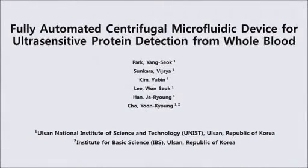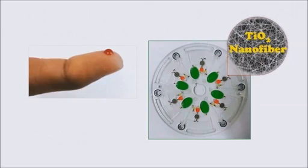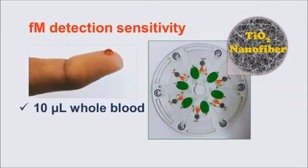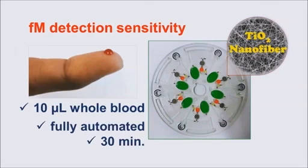The overall goal of this procedure is to improve the detection sensitivity of ELISA using electrospun nanofibers. This video demonstrates how to achieve femtomolar detection sensitivity of proteins in 10 microliter of whole blood samples within 30 minutes.